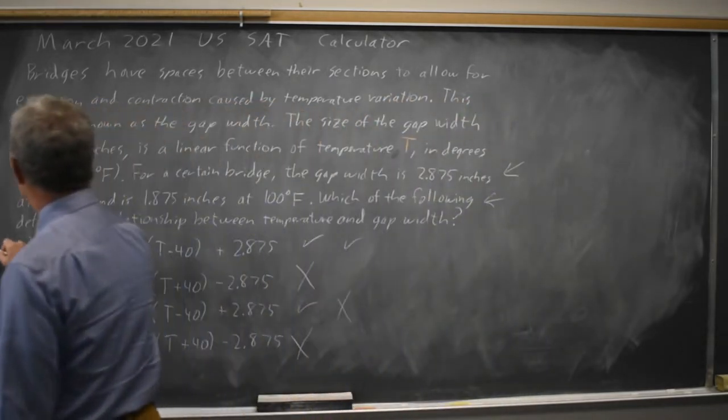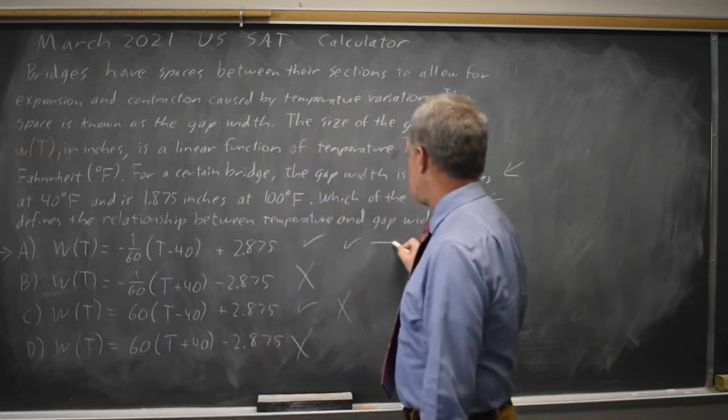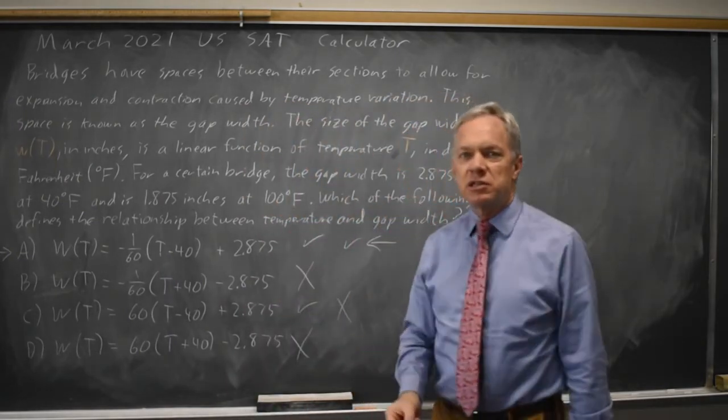Choice A worked for both points. Since two points determine a line and this is the equation of a line, choice A would be our correct answer.